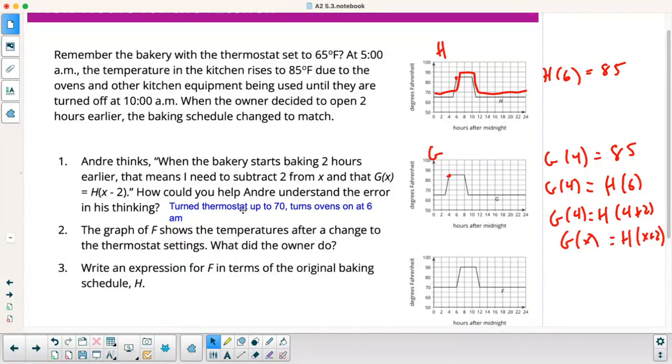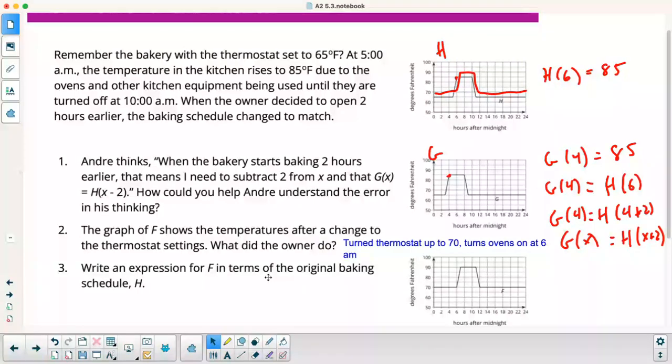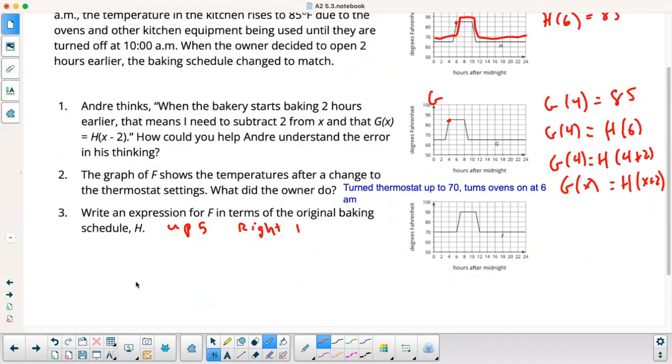Oh, I kind of wrote that in the wrong spot. Whoops. That would go right here for this question. Write expression F in terms. So what happened here? We shifted up 5 and then right 1. So expression for F in terms of H. So I think that's going to be F of X. So you take your H and we go right 1. So we're going to replace the X with X minus 1. And then when I go up 5, I just add 5 on.